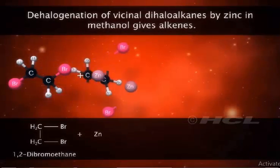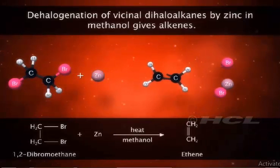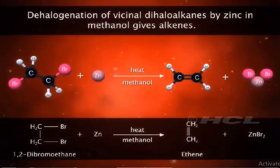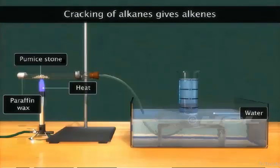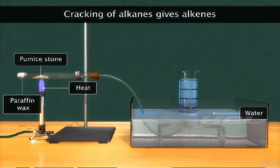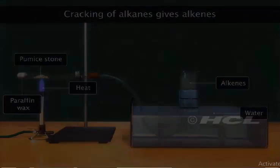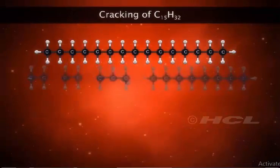Alkenes can be obtained from vicinal dihaloalkanes by heating with zinc in methanol. In this method, a halogen molecule is removed. Cracking allows large hydrocarbon molecules to be broken down into smaller, more useful hydrocarbon molecules, giving a mixture of products such as ethene and propene.